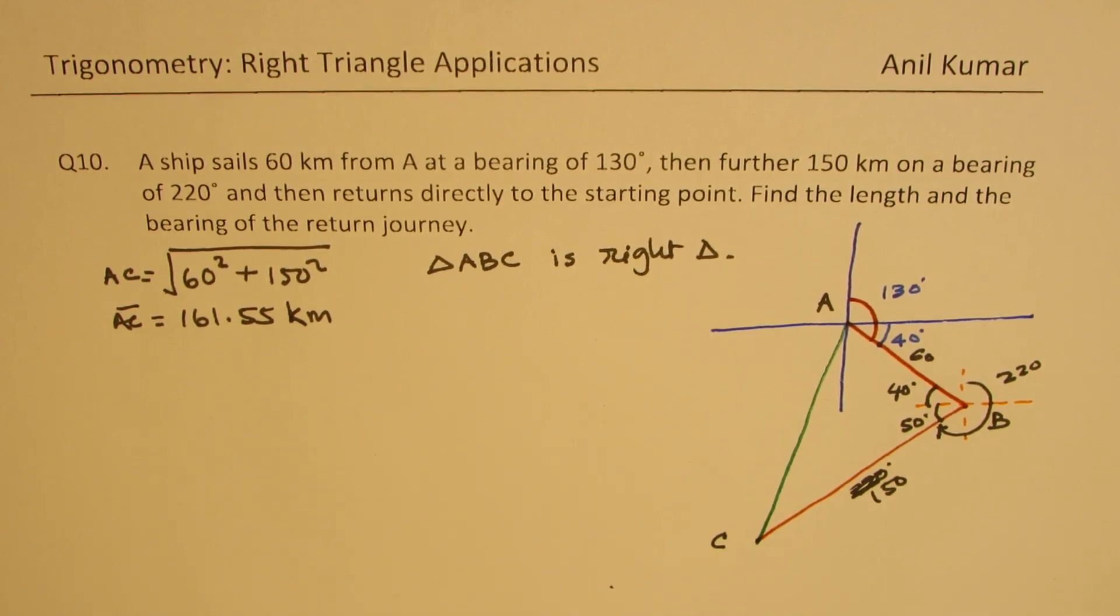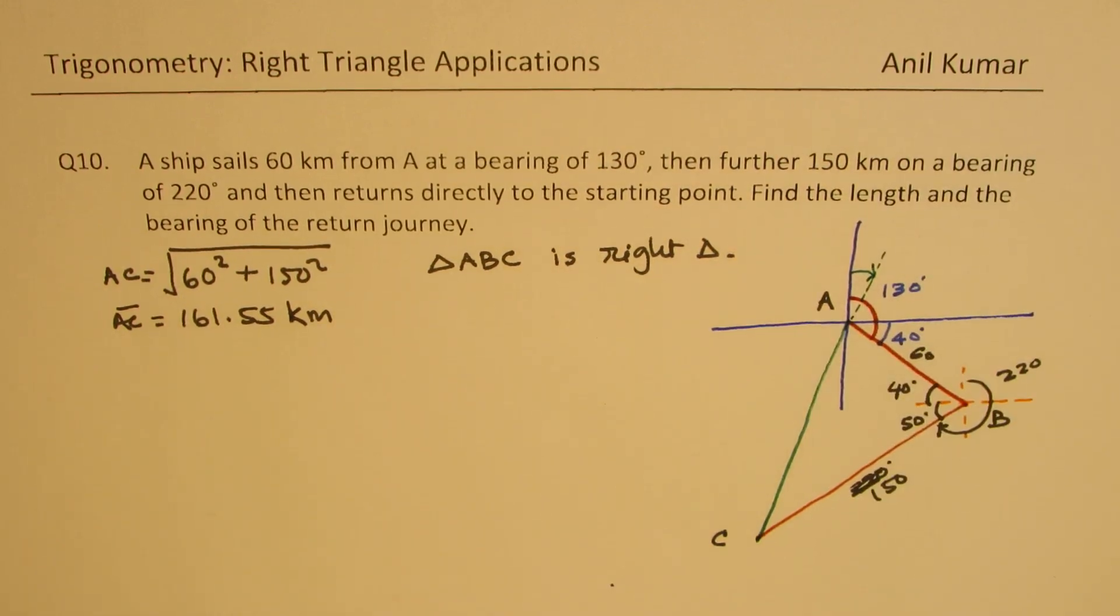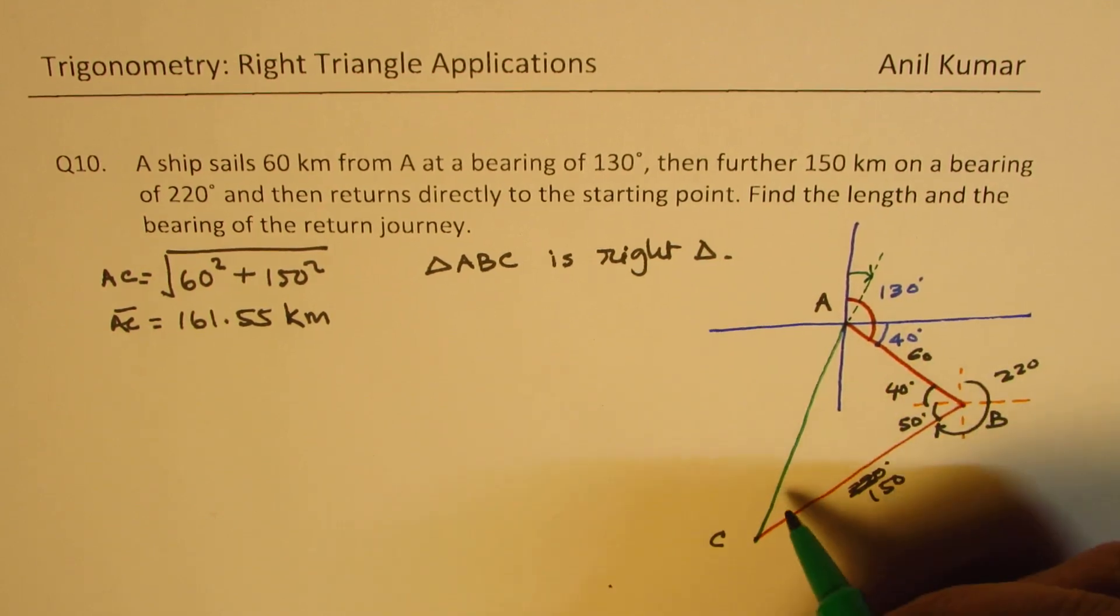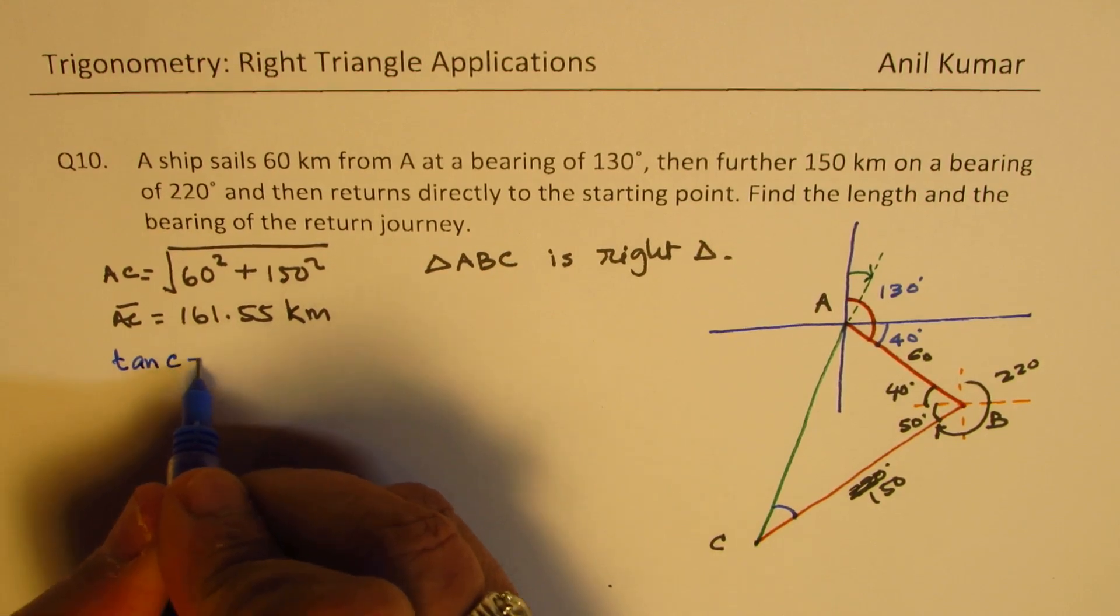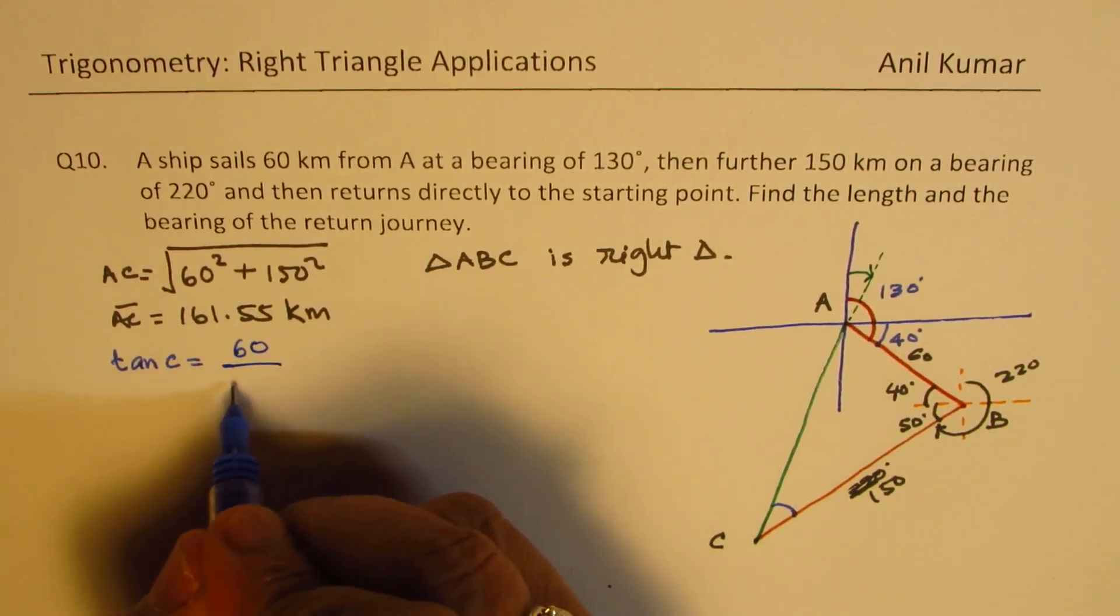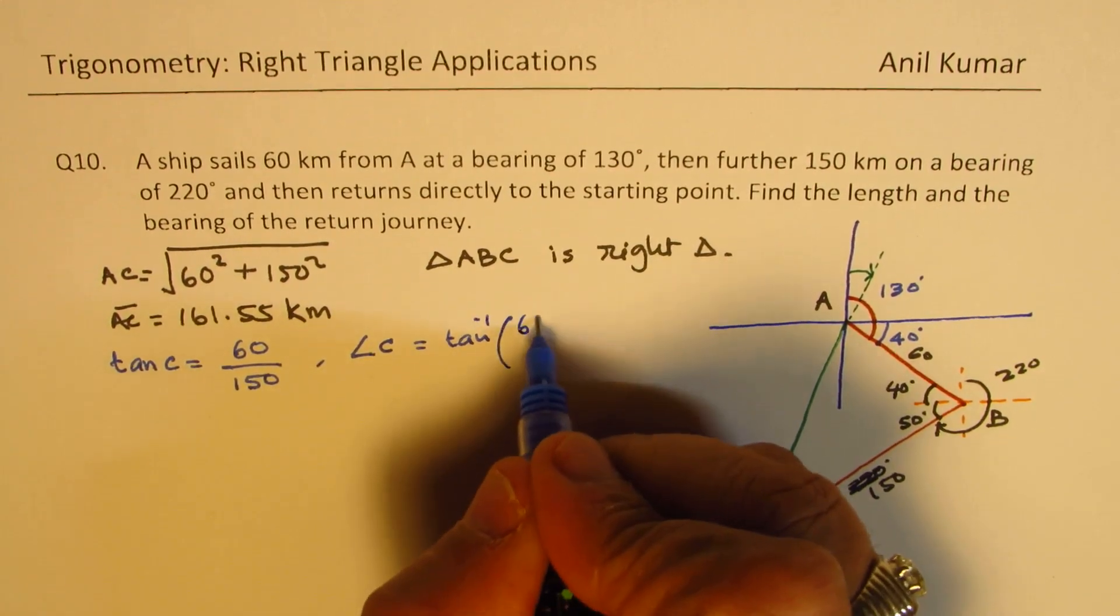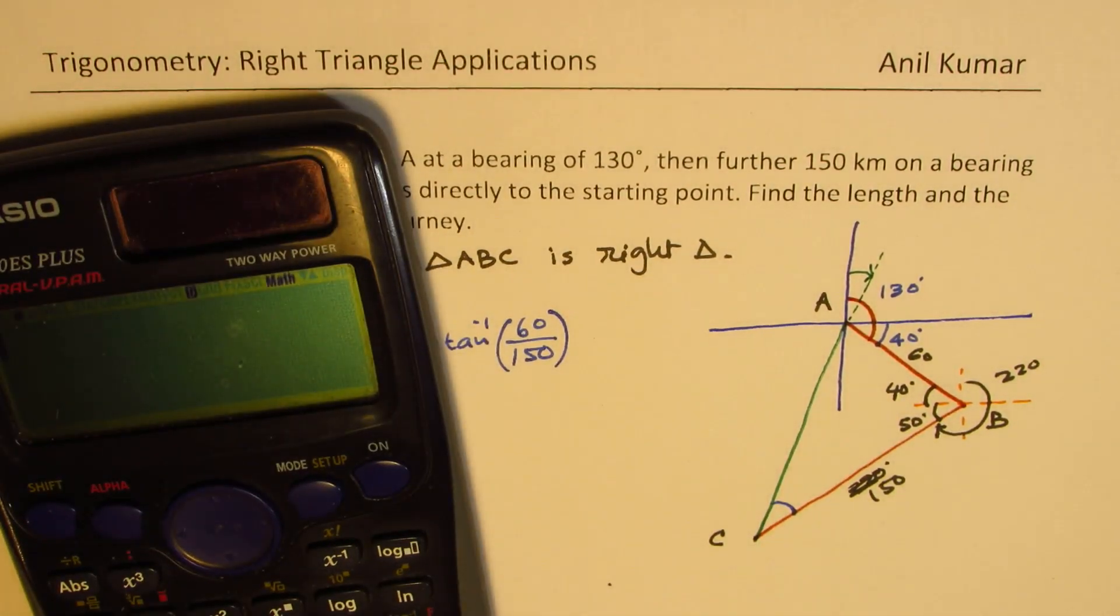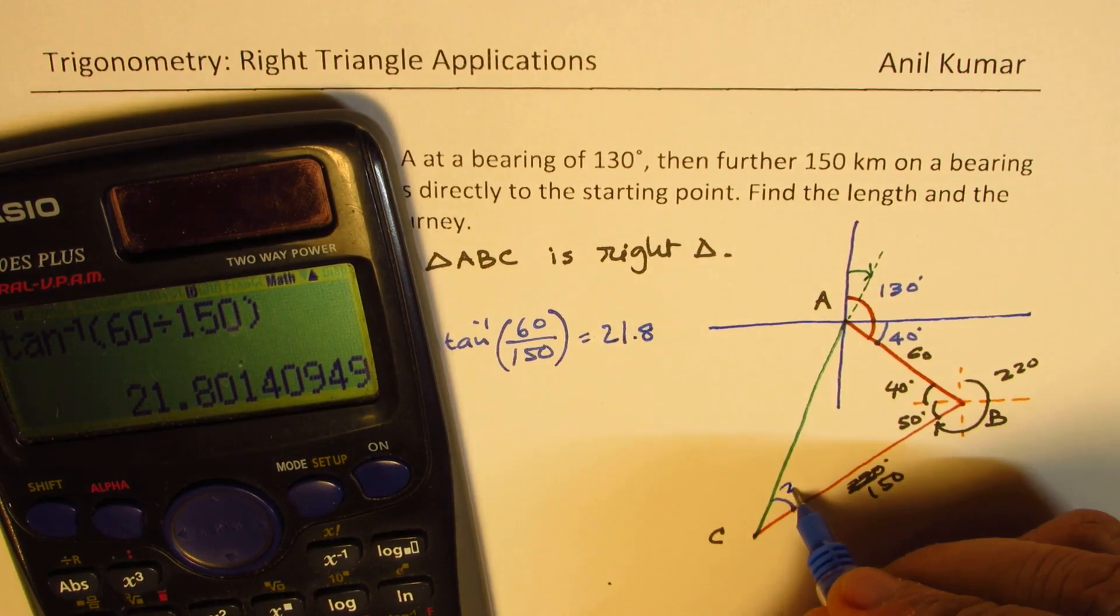Now we need to find the bearing angle. So we need to find this angle. Since this is a right angle, we can use a tan ratio to find this angle, angle C. So we can say tan C is equal to 60 over 150. That means angle C is equal to tan inverse of 60 over 150. So we have shift tan inverse, 60 divided by 150, which is 21.8. So this is 21.8.